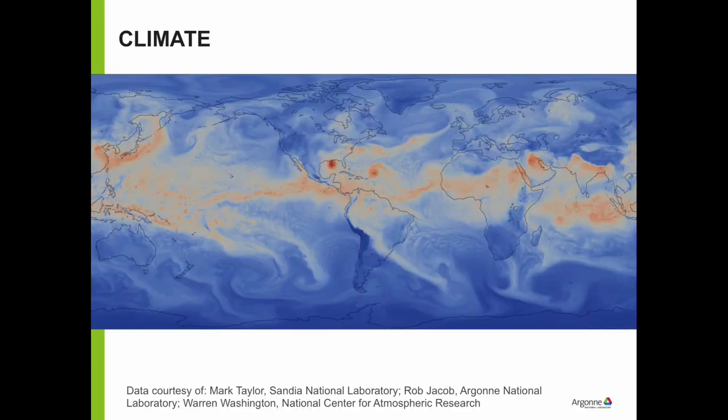This is a climate example where they started with observed data at very high resolution. This particular simulation was done on a grid of one-eighth of a degree of latitude and longitude. At the time it was done, it was the largest resolution simulation of its kind for a global scale. Regional scales do get much higher resolution, but for a global scale, this was one of the highest resolution simulations done to date.